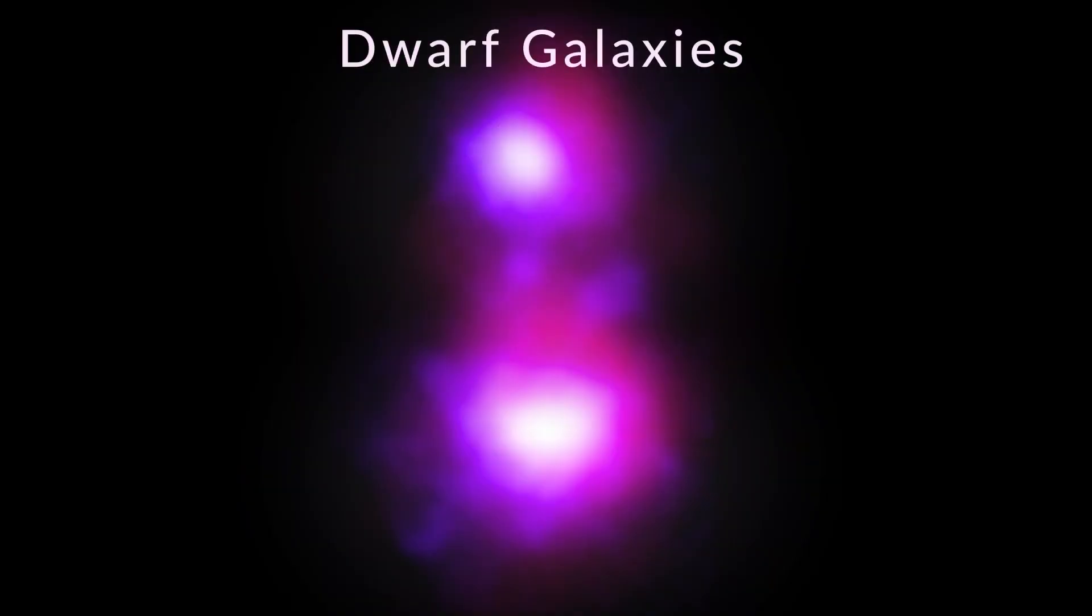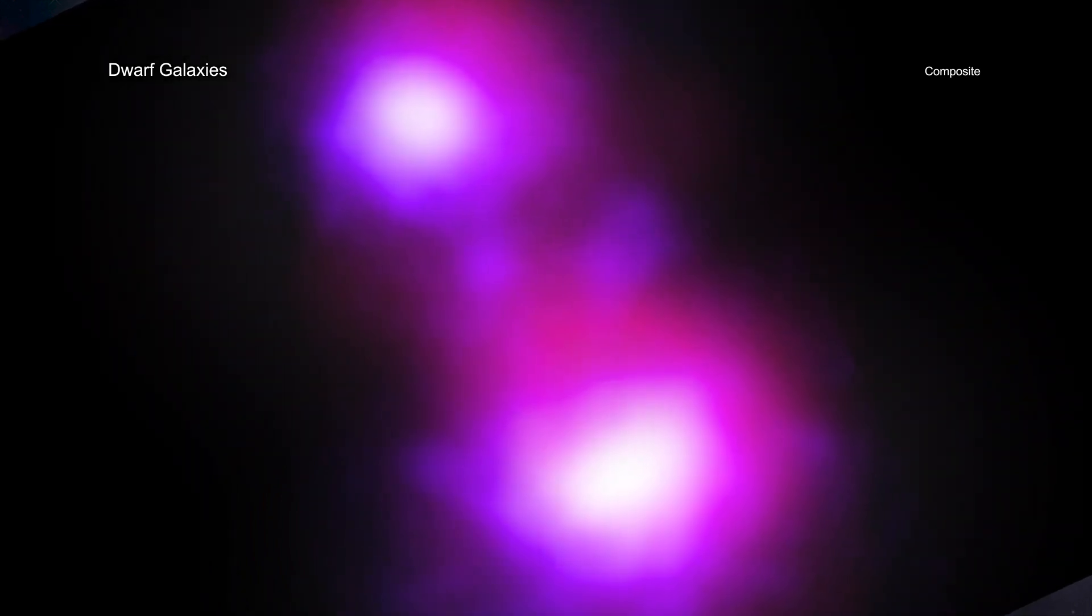Dwarf Galaxies. Astronomers have discovered the first evidence for giant black holes in dwarf galaxies on a collision course. This result from NASA's Chandra X-ray Observatory has important ramifications for understanding how the first wave of black holes in galaxies grew in the early universe.